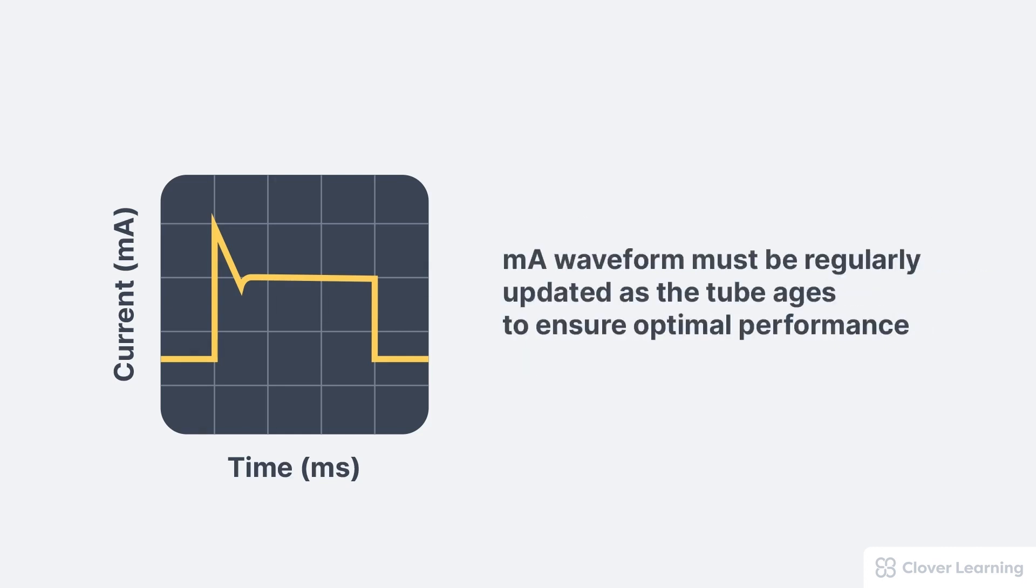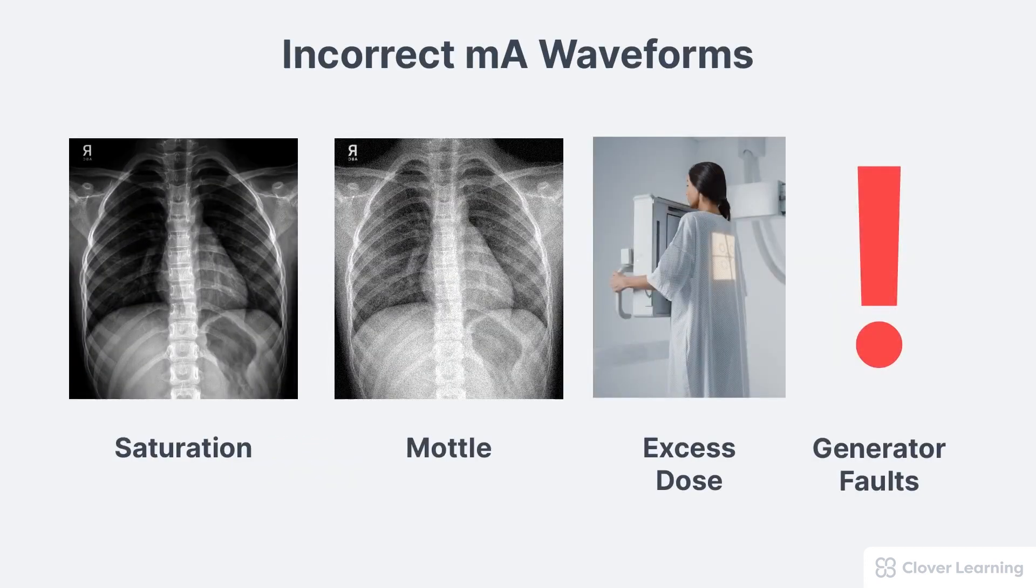Also, the MA waveform must be regularly updated as the tube ages to ensure accurate and optimal system performance. This is because the x-ray tube properties can change over time. Just like KV, incorrect MA waveforms can result in several adverse effects, including image quality issues, unnecessary patient dose, and generator faults.